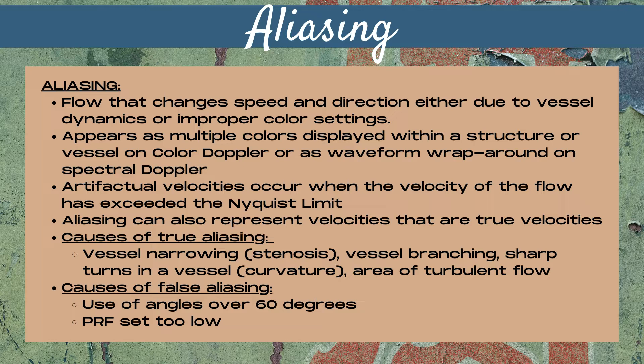Artifactual velocities occur when the velocity of the flow has exceeded the Nyquist limit. Aliasing can also represent velocities that are true velocities within a vessel. Causes of true aliasing are vessel narrowing such as a stenosis, a vessel branching, sharp turns in a vessel such as a curvature, and also within areas of turbulent flow within a vessel. Causes of artifactual aliasing are the use of doppler angles over 60 degrees, or a PRF or scale setting that's set too low.